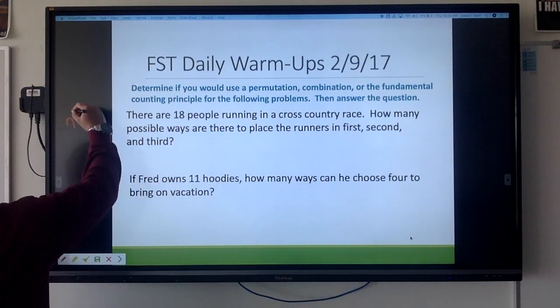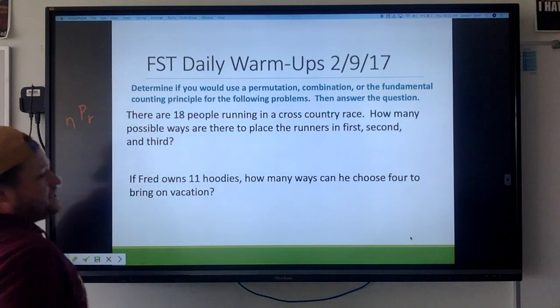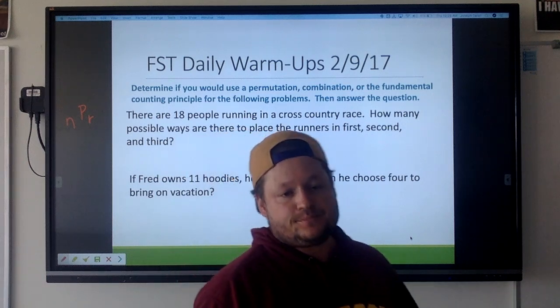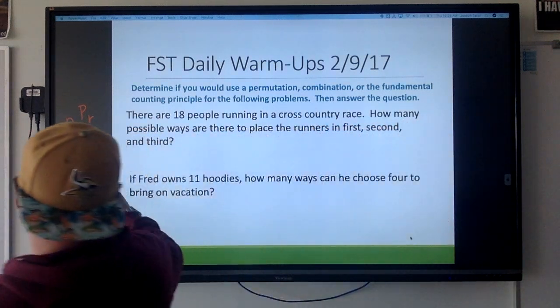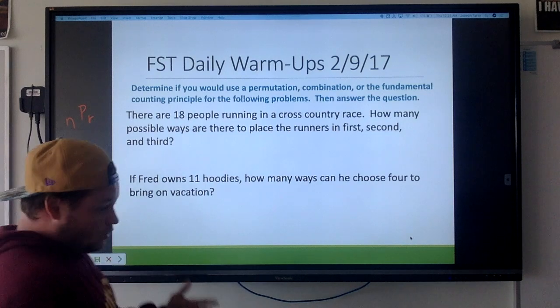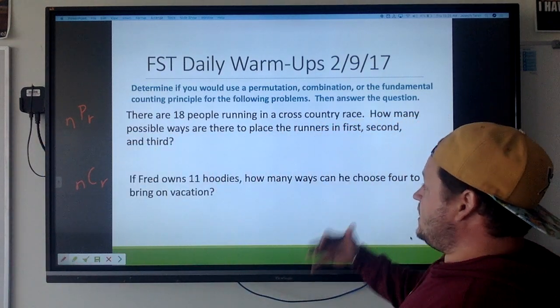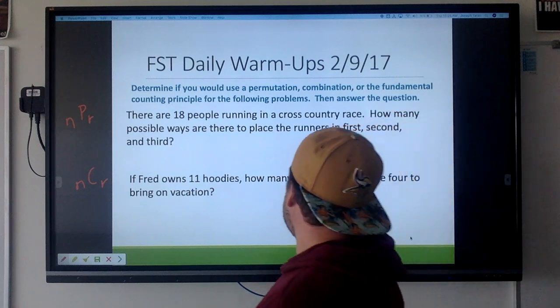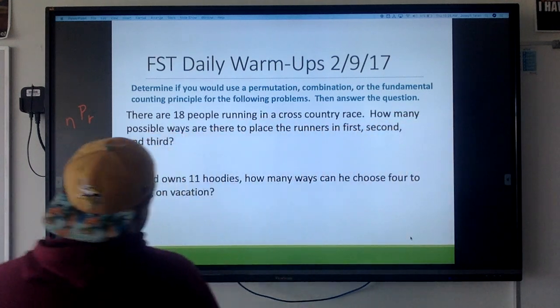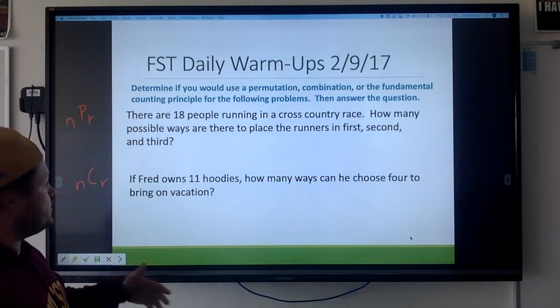Remember, permutations is when order matters, combinations is when order does not matter. When you're doing permutations you're using this nPr in your calculator, for combinations you're using nCr. So let's go ahead and read the question here: there are 18 people running in a cross-country race, how many possible ways are there to place the runners in first, second, and third?